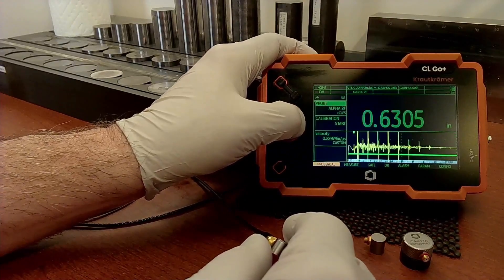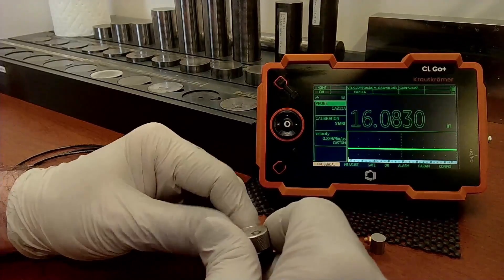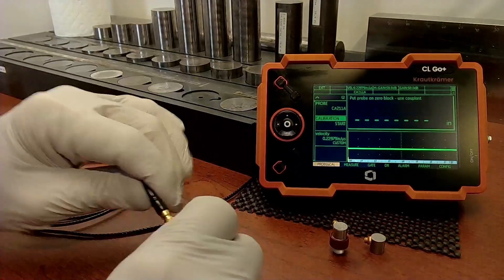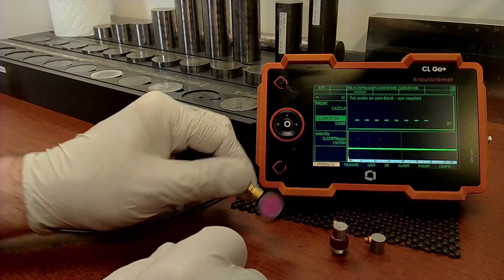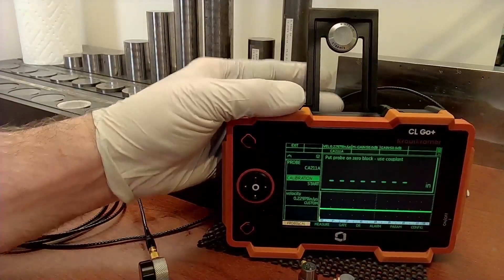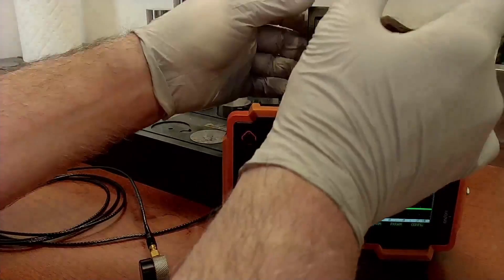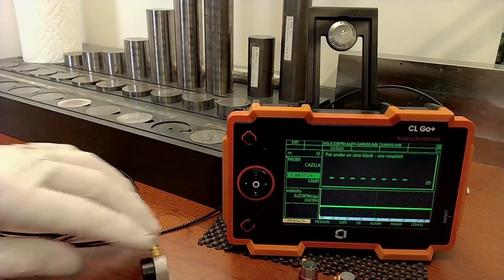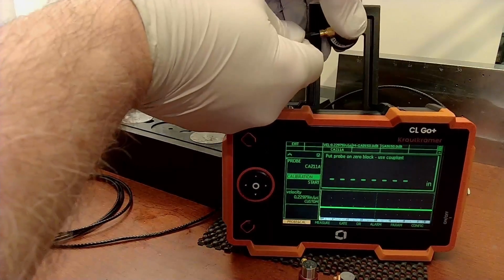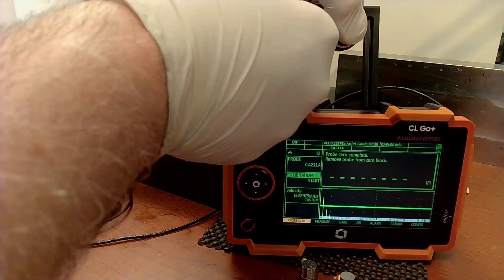Let's take a look at a different probe. We'll switch to the CA-211 probe. Now the CA-211 is typically used for a little bit thicker materials. So let's do a calibration. Now, there's two steps to calibrating a direct contact probe. The first step is used to establish probe delay. And to do that, we have a zero block that is built into the kickstand of the instrument. So put just a drop of couplant on there. And we couple our probe to the zero block. And the instrument acquires the data from the zero block.